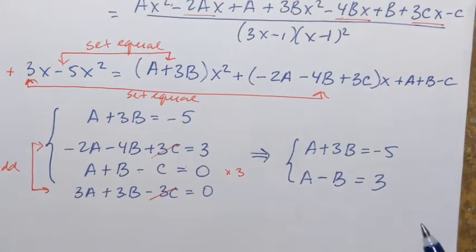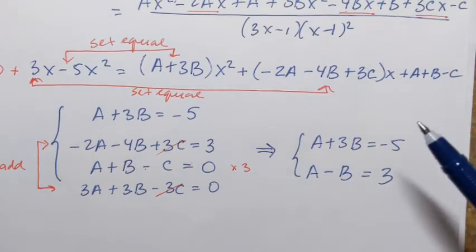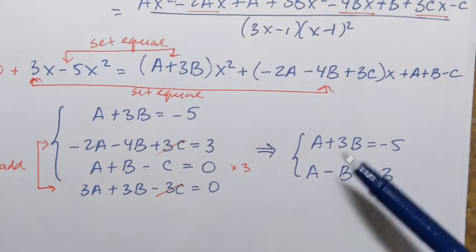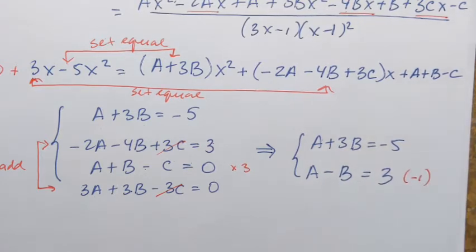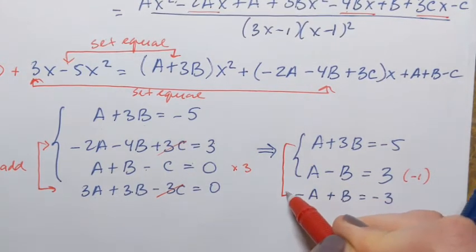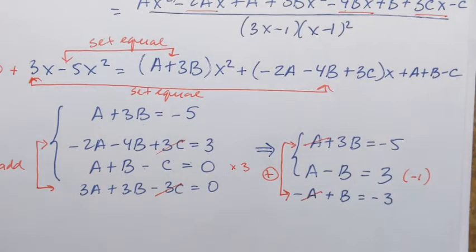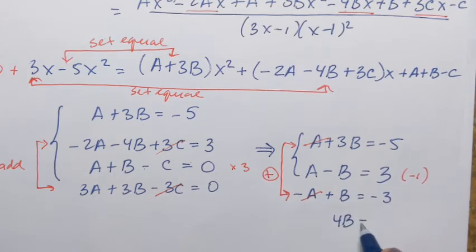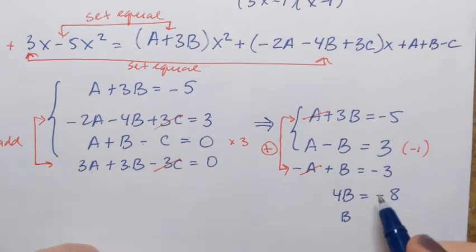Now I have a two-equation system: (a plus 3b equals negative 5) and (a minus b equals 3). Using elimination to eliminate a, I multiply the second equation by negative 1 to get negative a plus b equals negative 3. Adding: a cancels, 3b plus b is 4b, and negative 5 plus negative 3 is negative 8. So 4b equals negative 8, giving b equals negative 2.